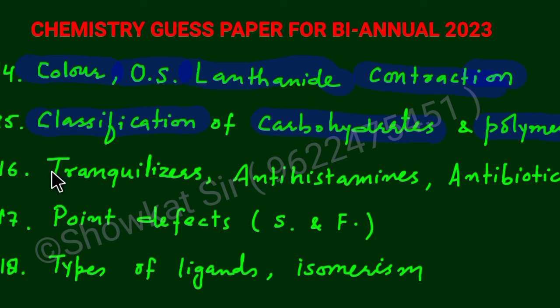Next you will study the classification of carbohydrates and polymers. This question is very important: classification of carbohydrates and classification of polymers. And similarly then these terms you should know the examples and what are actually these: the tranquilizers, antihistamines, antibiotics, analgesics. You should go through these. Next in solid state you will study the point defects, that is the Schottky and the Frenkel defect. You should know the difference between Schottky and Frenkel. You should also go through the diagram. Similarly you can also prepare here the properties of solids: we are having paramagnetic, diamagnetic substance, ferromagnetic.